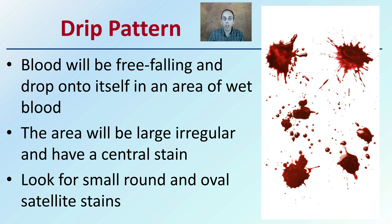Blood will be free-falling and drop onto itself in an area of wet blood. The area will be large, irregular, and have a central stain. Look for the small, round, and oval satellite stains that do occur. These are the little satellite stains — small areas independent and outside of that original drop. These little points are called spikes. Satellites are the independent small drops that occur around that main central drop.